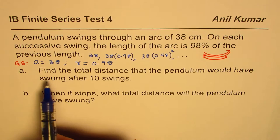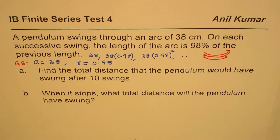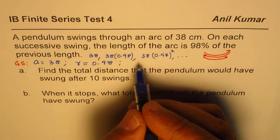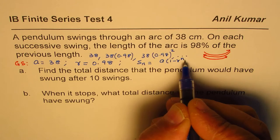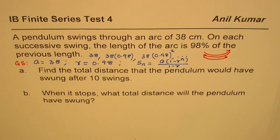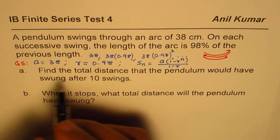Now in this question, we need to find total distance that the pendulum would have swung in 10 swings. So we know n is 10, and the formula for the distance is: s of n equals a times (1 minus r to the power of n) divided by (1 minus r). We'll apply this formula to answer the question.